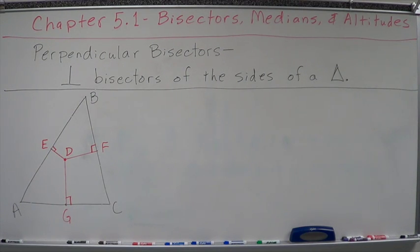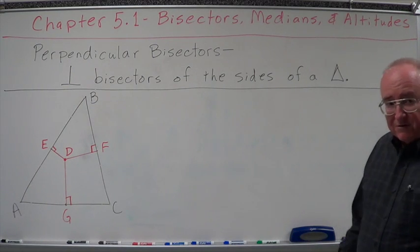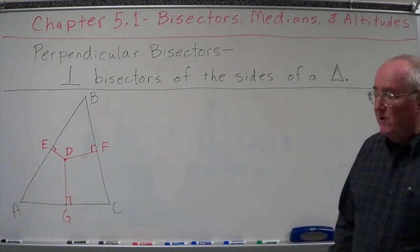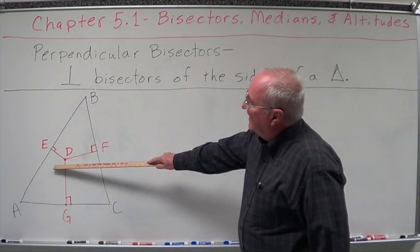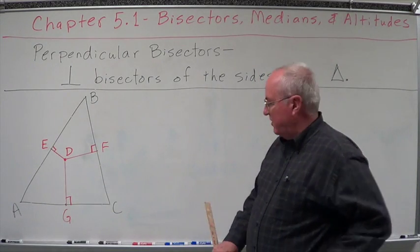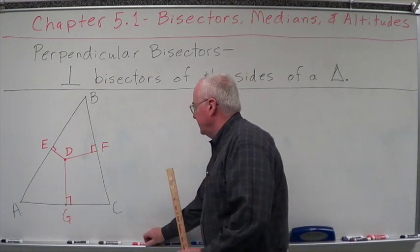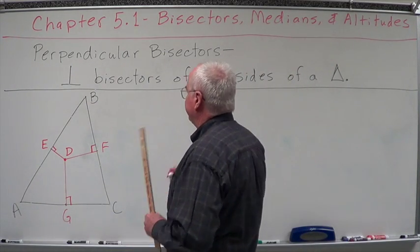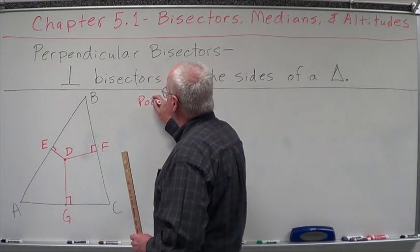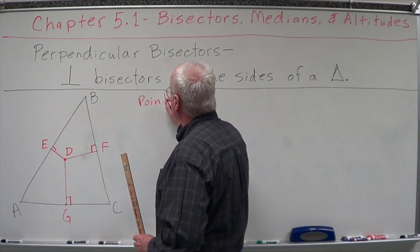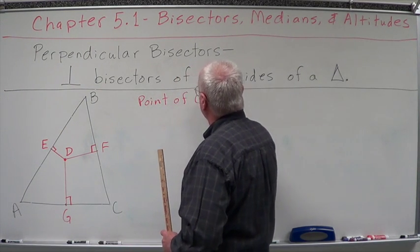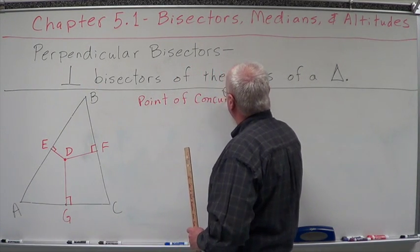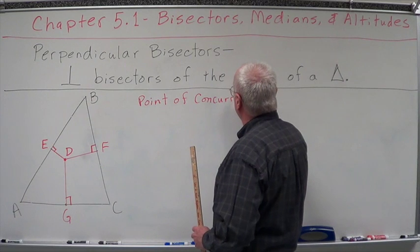You may have to extend the lines, you may have to draw some auxiliary lines or whatever, but they're all going to be concurrent lines and they're all going to have a point of concurrency. The point of concurrency for this one is called the circumcenter.